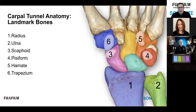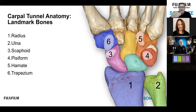First thing in the carpal tunnel: find the biggest bone in the area, which is the radius — number one. Number two, the ulna. The scaphoid and pisiform mark our inlet, labeled three and four. Then we're going to go to the outlet at the hamate and the trapezium. Once you're familiar with those bony landmarks, then we'll work toward where we're going to start scanning our median nerve.